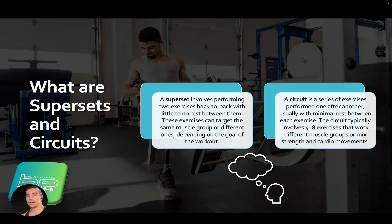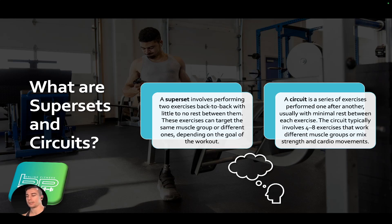A circuit typically involves four to eight exercises that work different muscle groups or mix strength and cardio-based movements. Supersets in simple terms are two exercises performed back-to-back. A lot of times supersets will target the same muscle group — for example, an incline dumbbell chest press supersetted with another chest exercise — in order to maximize the amount of time in your workout and get more done in a shorter period.